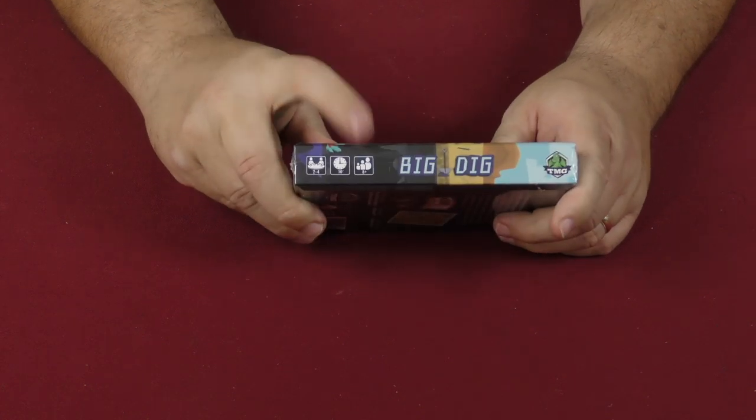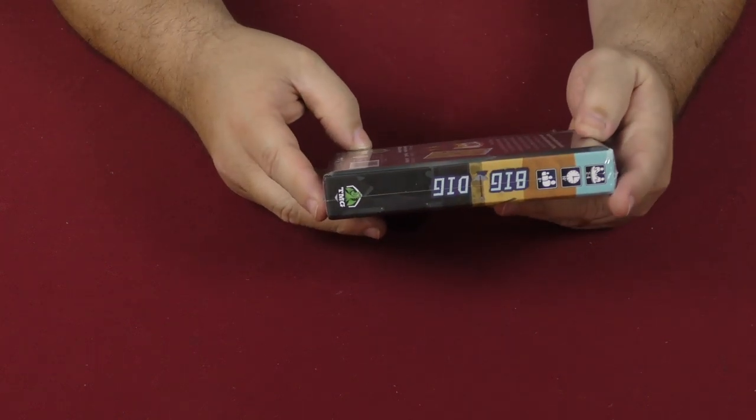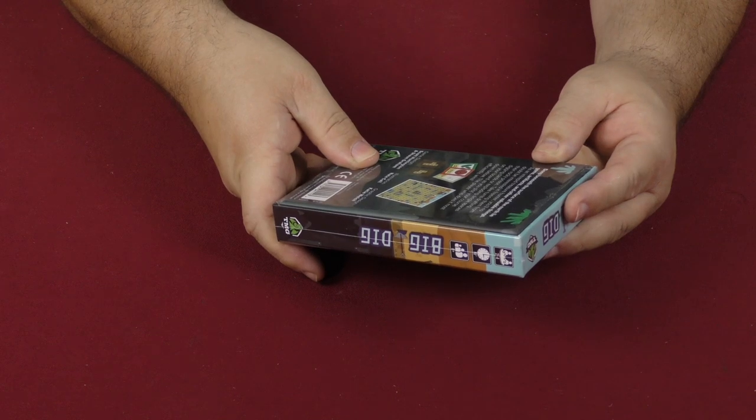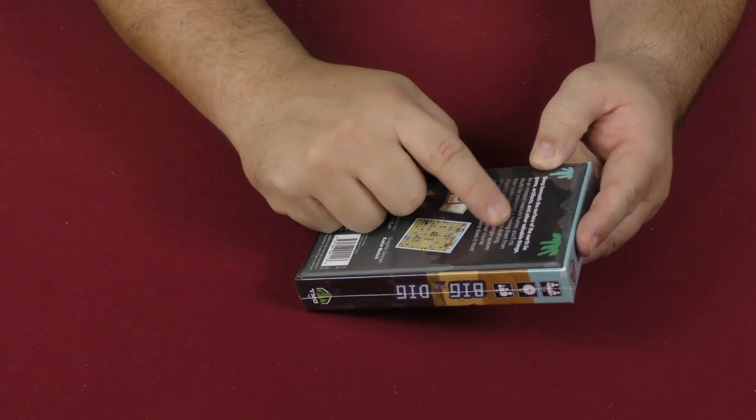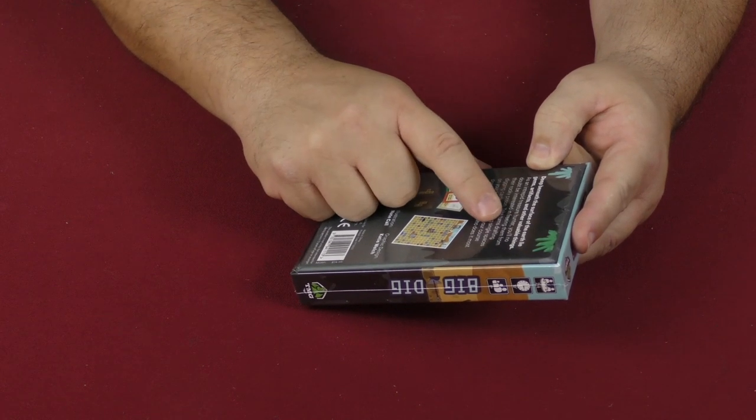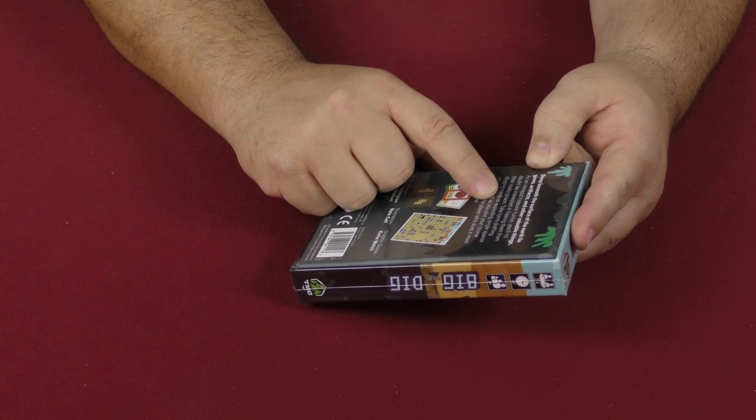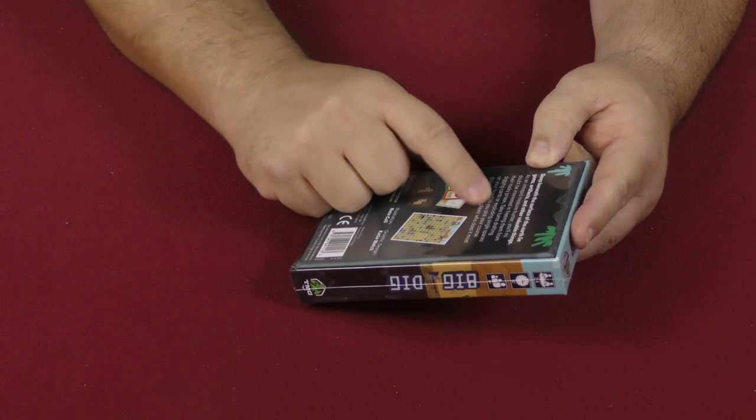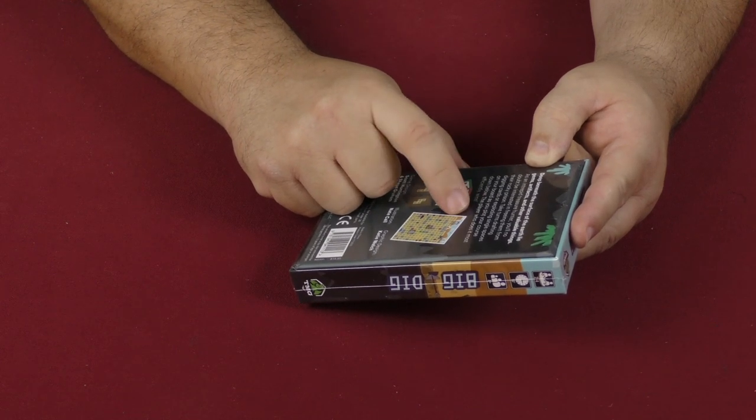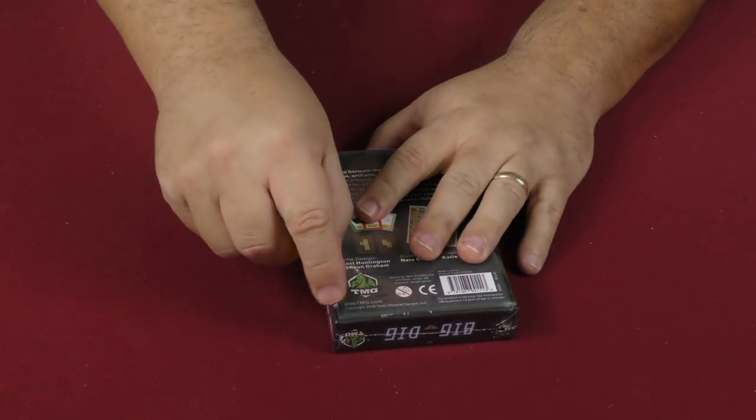It says: Deep beneath the surface of the earth lie gems, artifacts, and other valuable things. As an intrepid treasure hunter, you'll no doubt be interested in freeing them from their rocky prison. Take turns drafting digging cards or exploring single spaces on your board as you plot your course down below. The player who does it most efficiently is the winner.